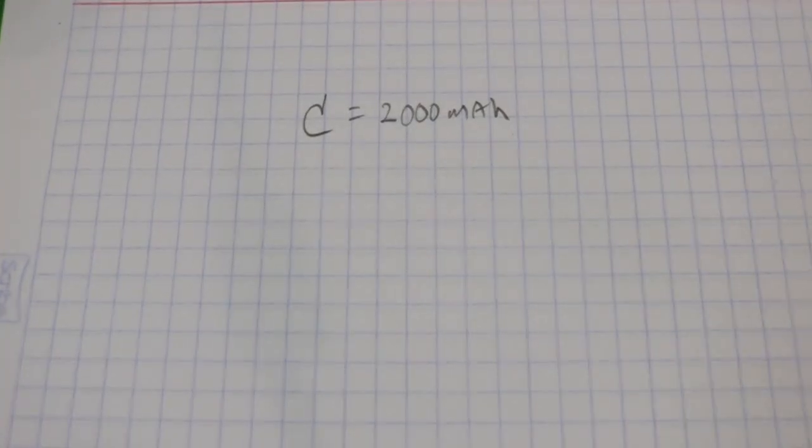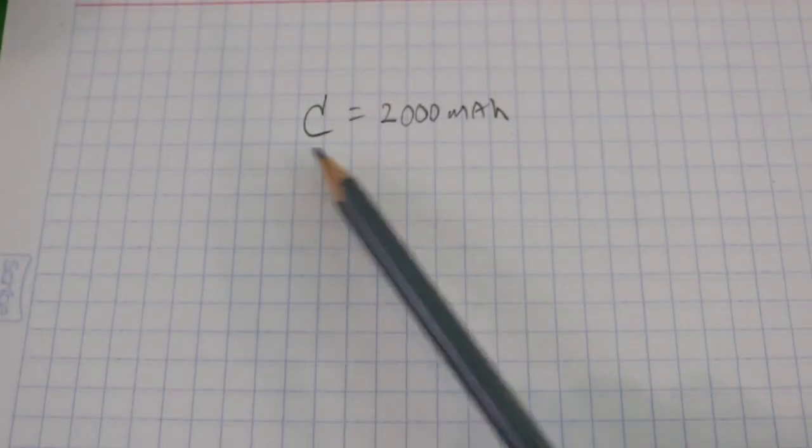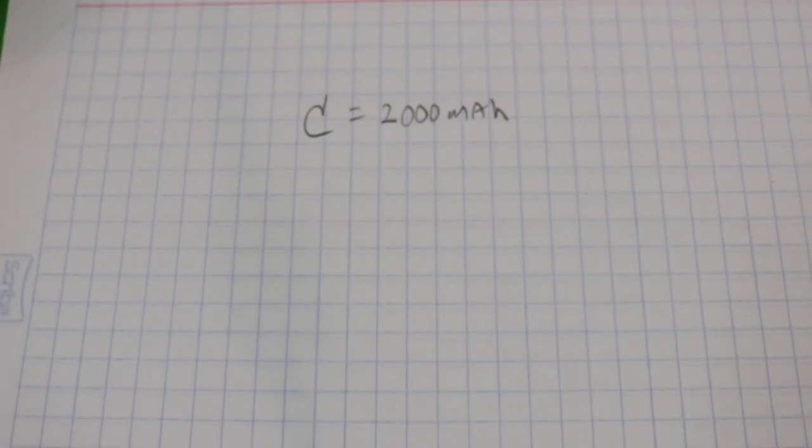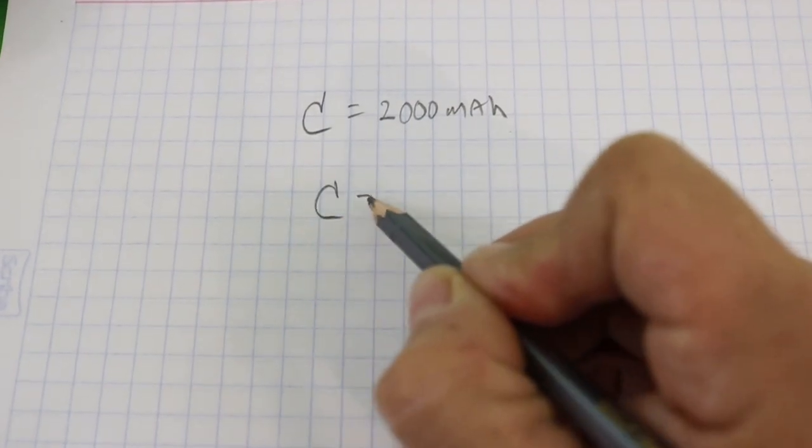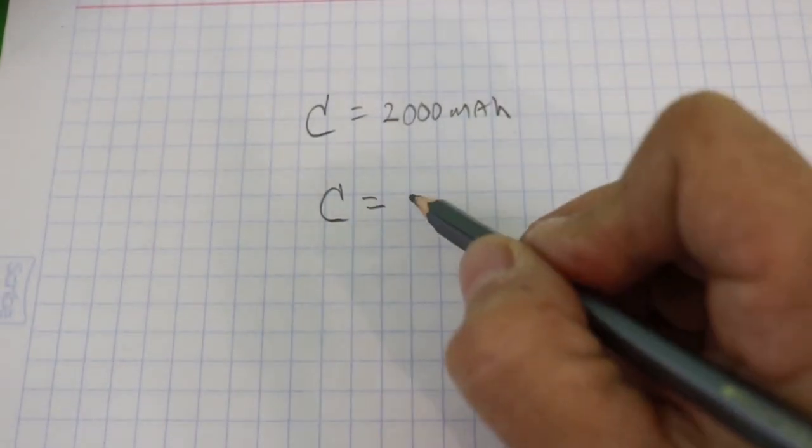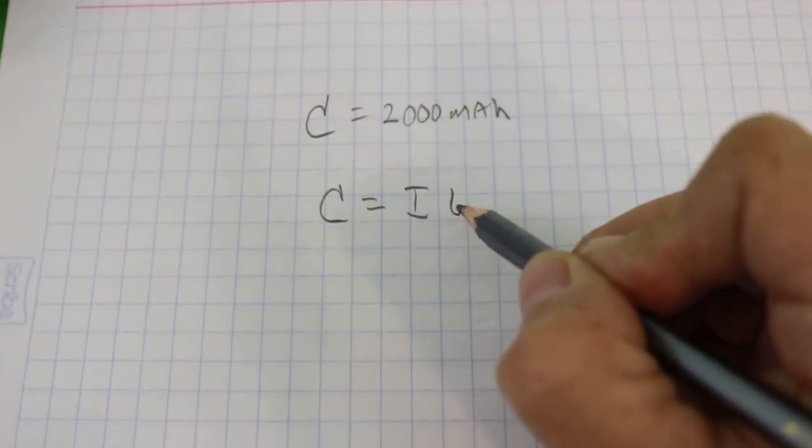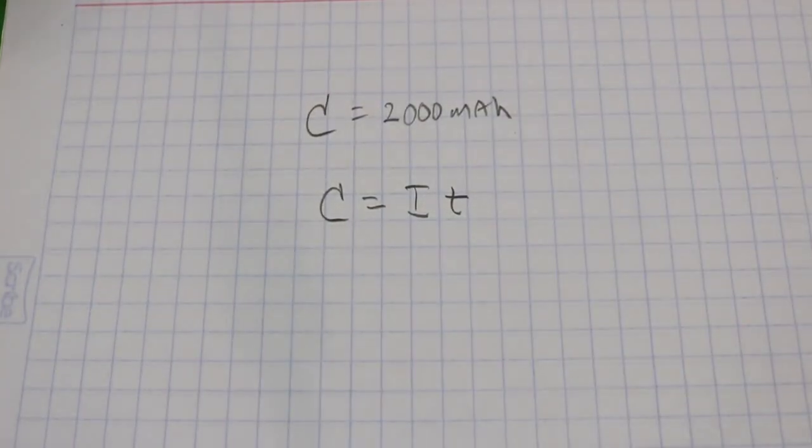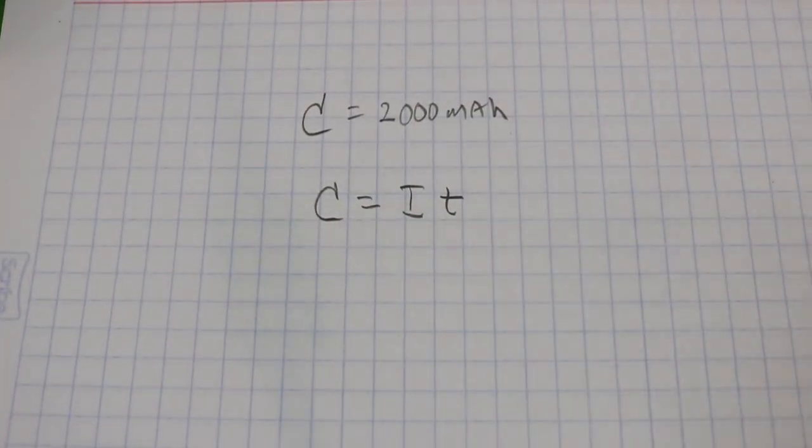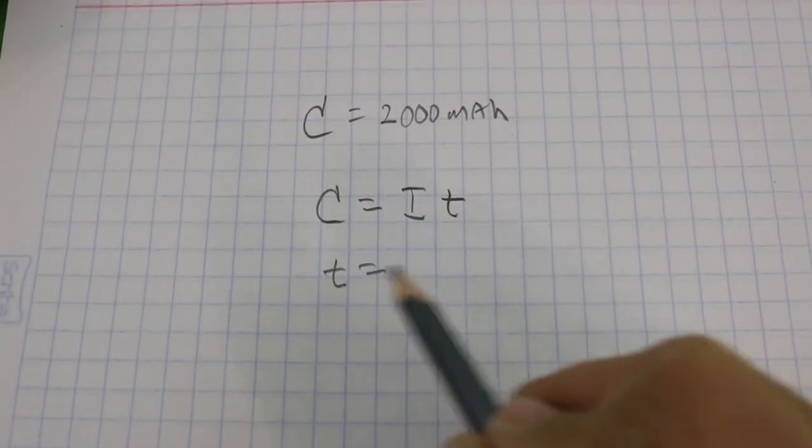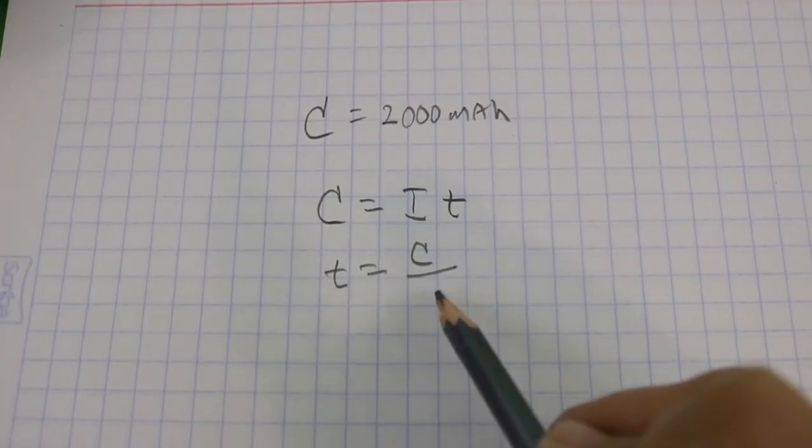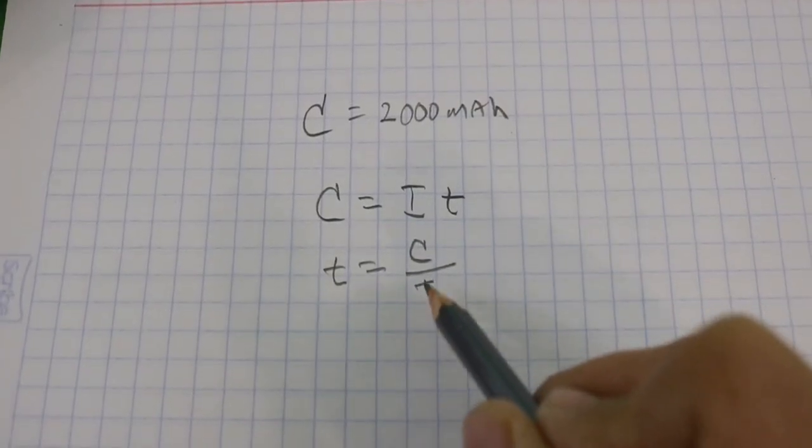If we draw more current, 4000 milliamps, then the battery will only give you this current for half an hour. In general, the formula to calculate the time is: Capacity equals current times the time, in milliamp hours. And from here, we can obtain the time as capacity divided by current.